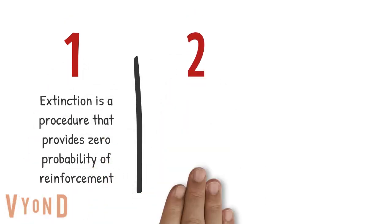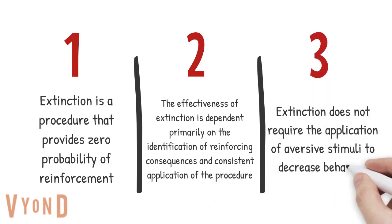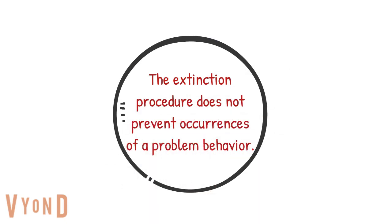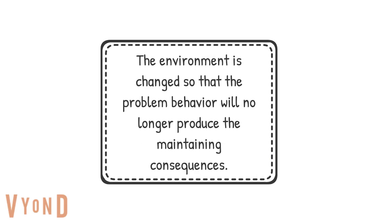Extinction is a procedure that provides zero probability of reinforcement. The effectiveness is really going to depend on identifying what the function of the behavior is, so that we're appropriately applying the right extinction procedure. Extinction does not have to be aversive to decrease a behavior. It just stops reinforcing problem behaviors so they eventually decrease. We're changing the environment so that the behavior will no longer be reinforced, and our behavior is part of the environment.